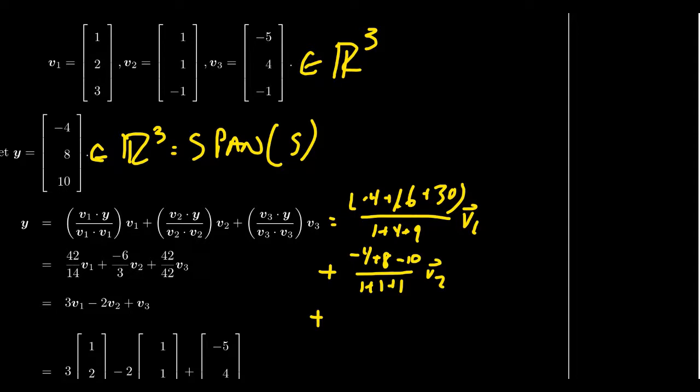And then, finally, if we take V3 dot Y, you're going to end up with 20 plus 32 minus 10, right there. And then, that will sit on top of 25 plus 16 plus 1. And so, simplifying that.